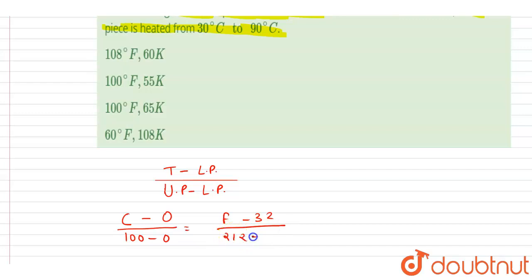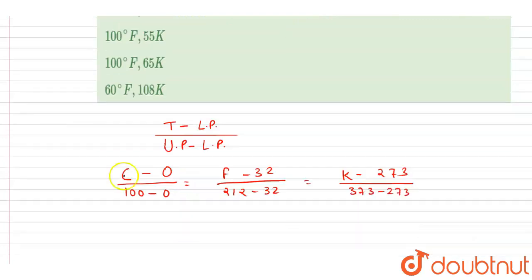Kelvin, the lower fixed point is 273, upper fixed point is 373. So basically we got this right. So if you see we got C by 100 is equals to